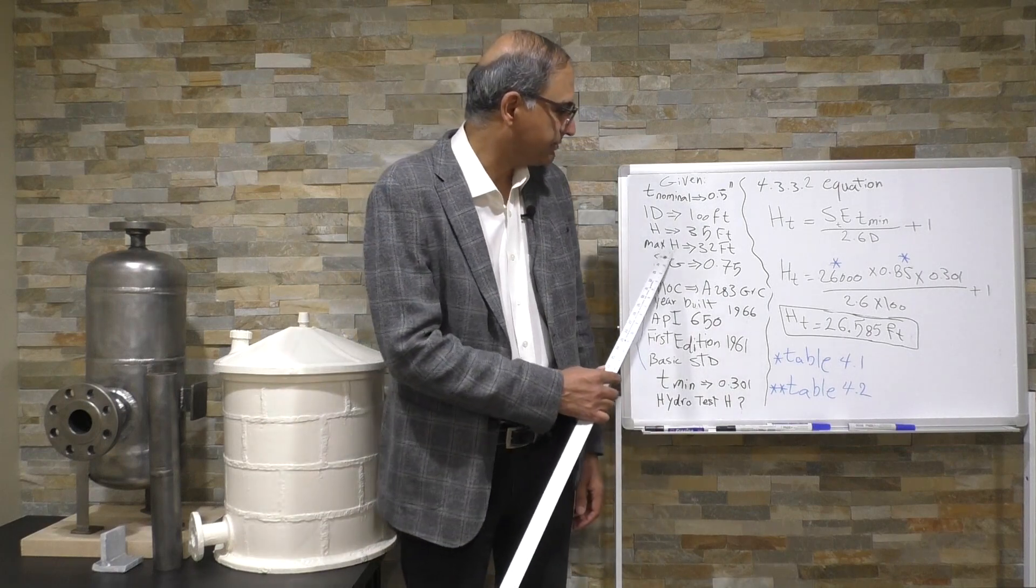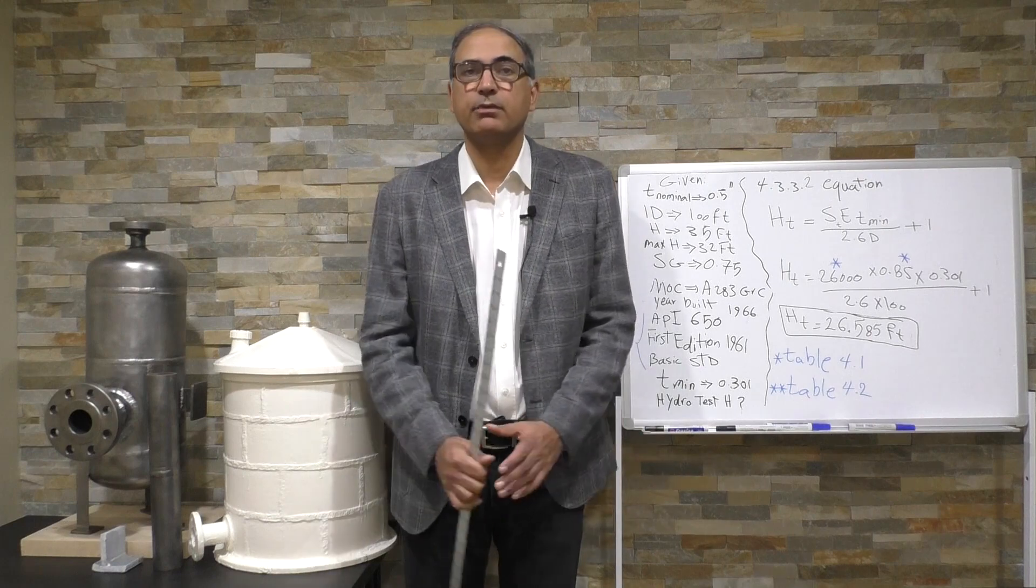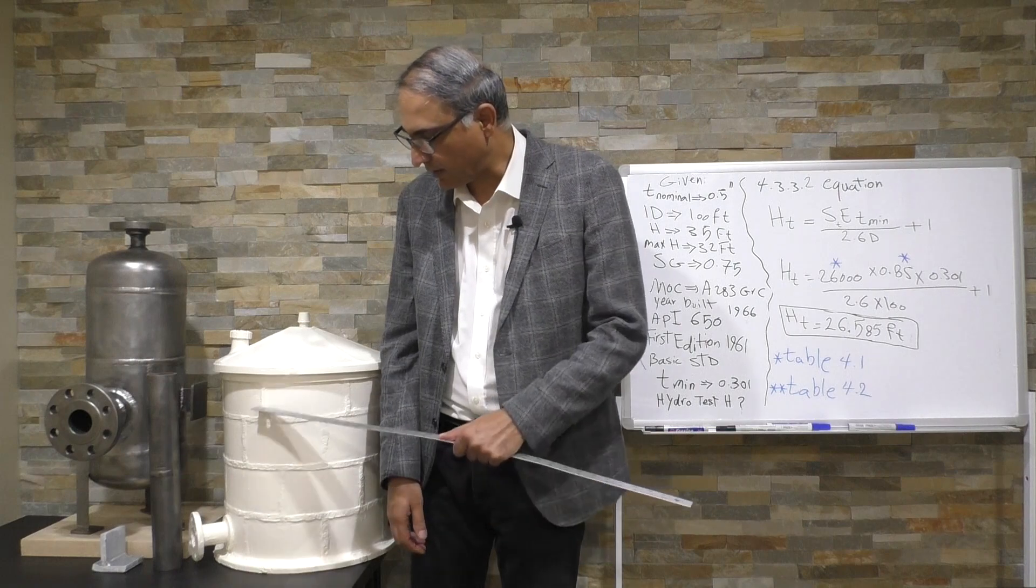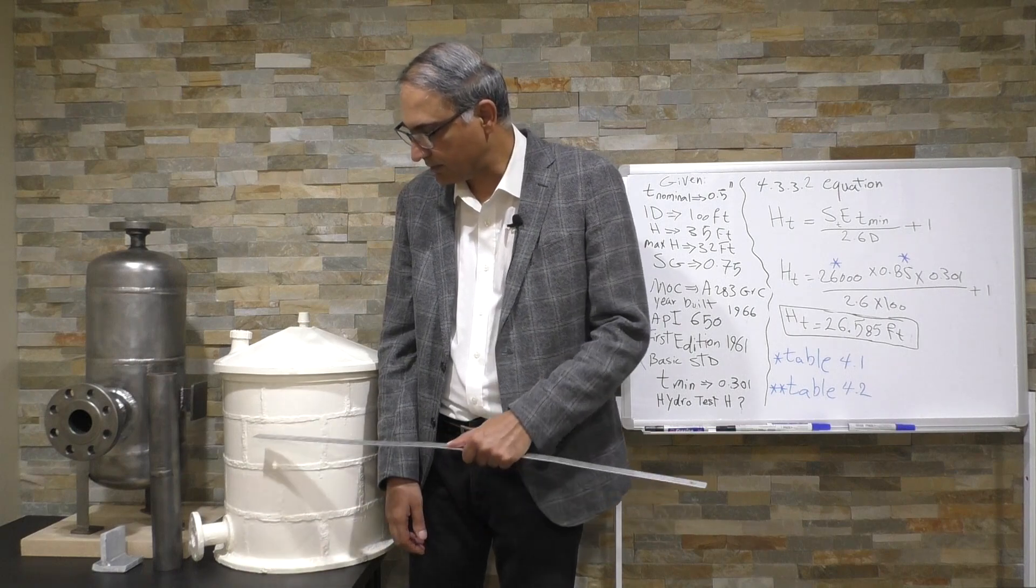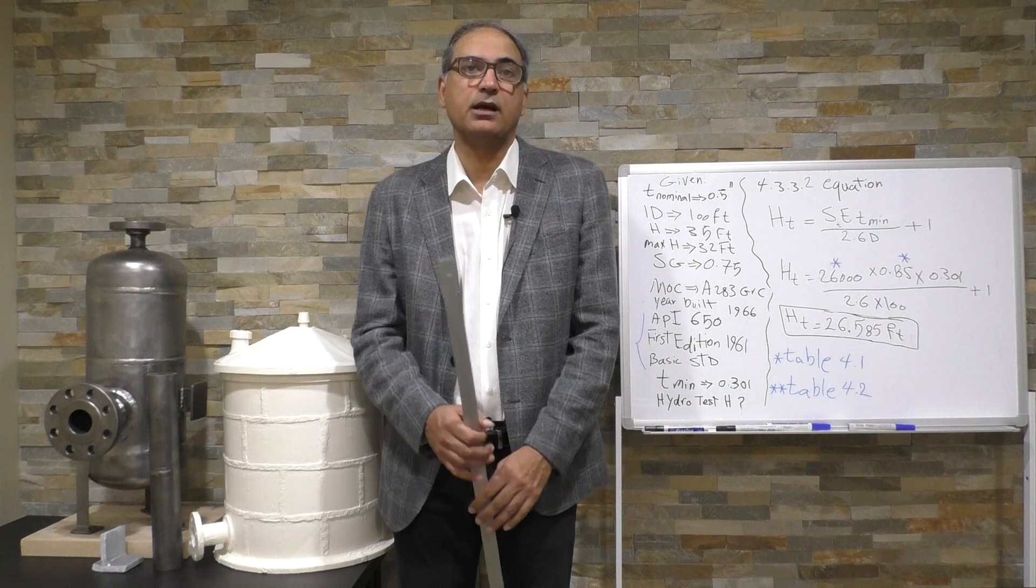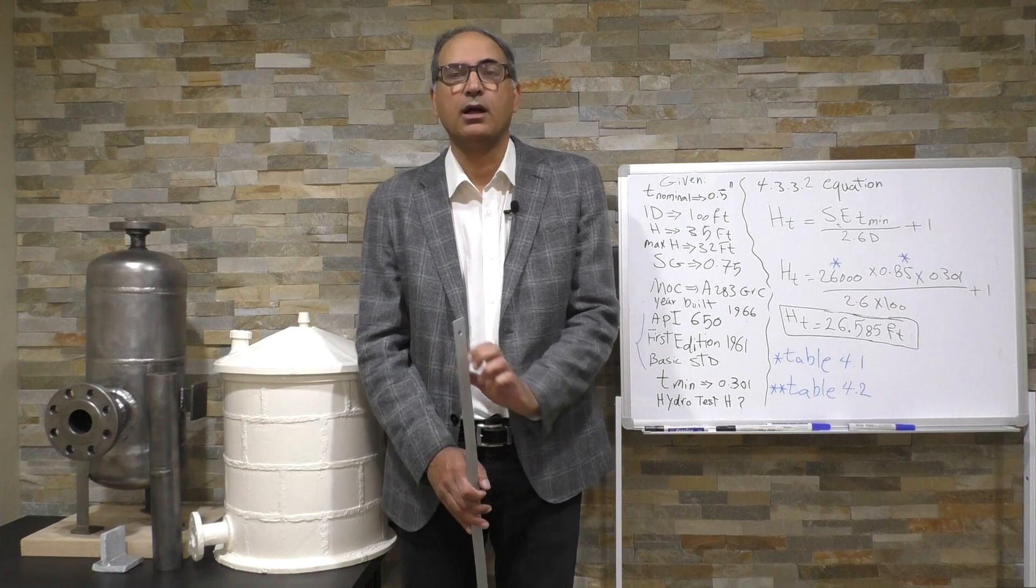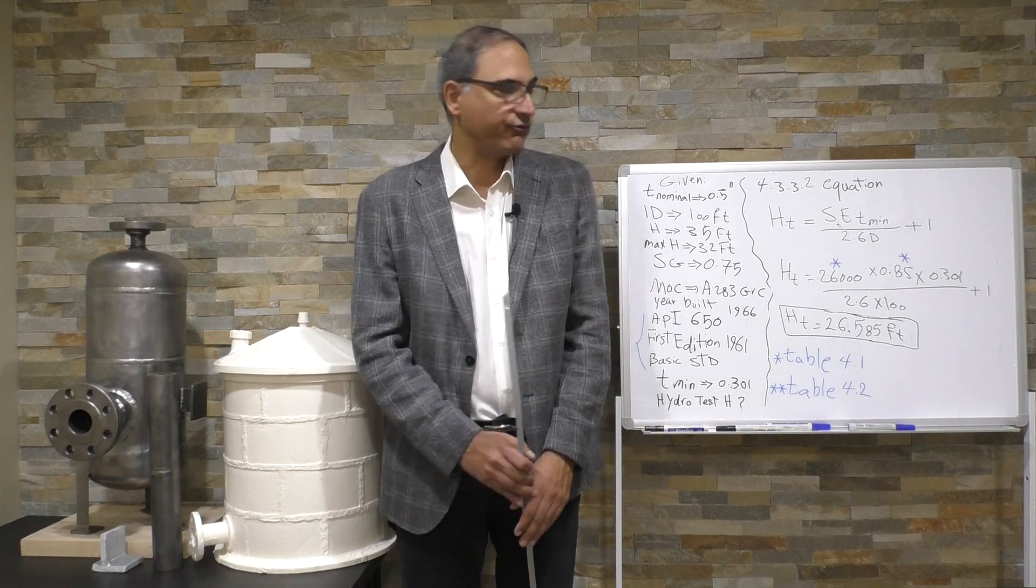The maximum liquid level is 32 feet. If the height is 35 and the maximum liquid level is 32, it's designed to maximum level to be 32 feet, and the liquid level is never going to go above 32 feet.